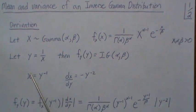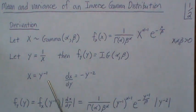So if we back solve for x, we get x is equal to 1 over y, and then the derivative of x with respect to y is minus y raised to the minus 2, or minus 1 over y squared.